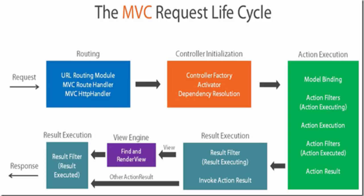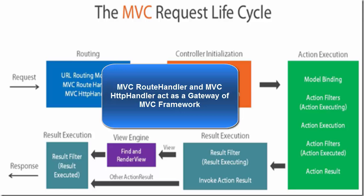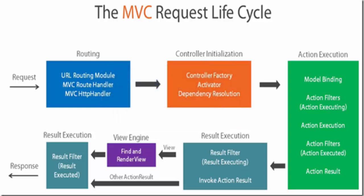If the route is found in the routing table, the MVC route handler executes and brings an instance of the ASP.NET MVC HTTP handler. Together, they act as a gateway to the ASP.NET MVC framework. The MVC handler begins initialization and execution of the controller. The MVC HTTP handler also takes on converting the route data into a concrete controller capable of serving the request. The ASP.NET MVC handler does all this with the help of the ASP.NET MVC controller factory and activators, which are responsible for creating an instance of the controller.